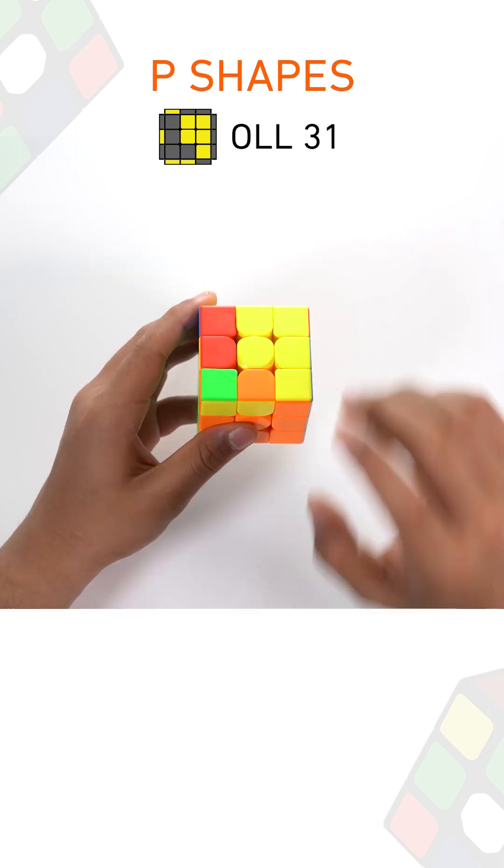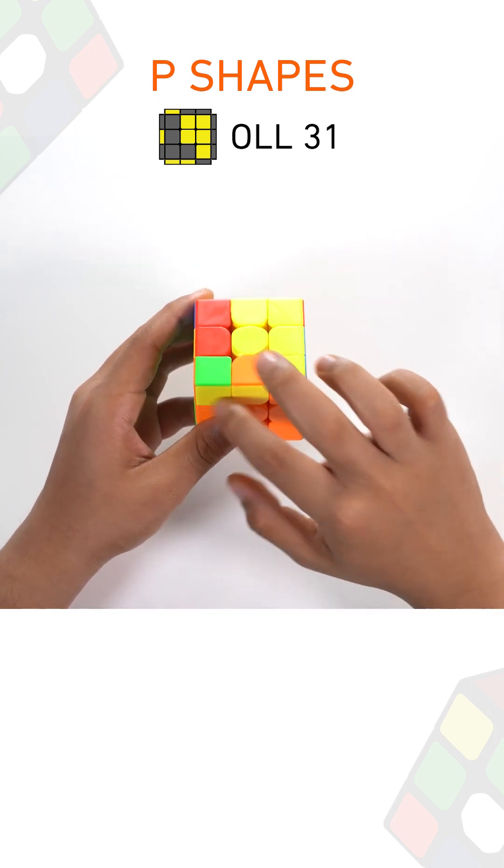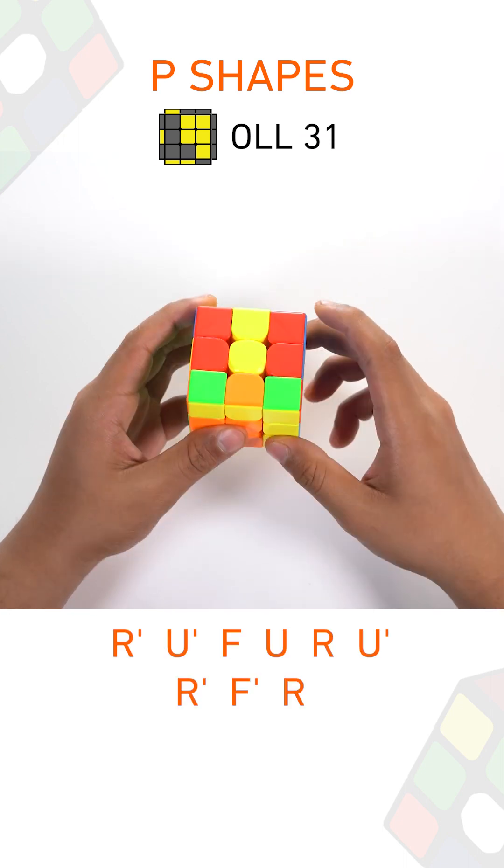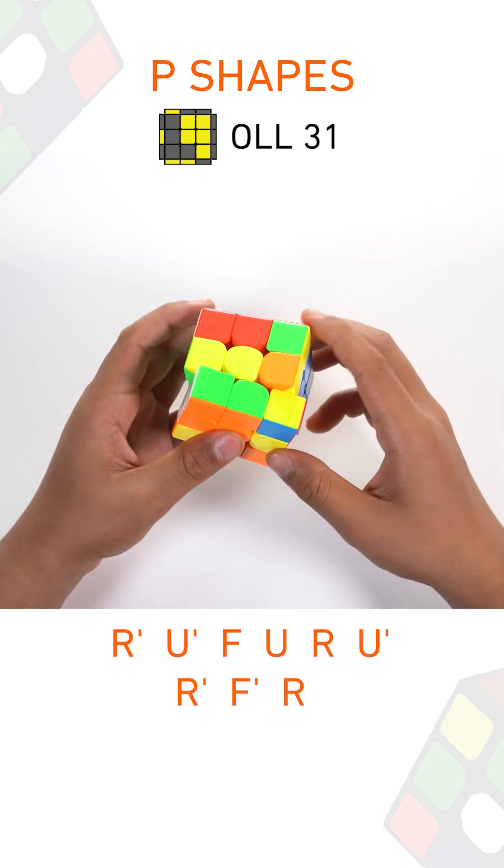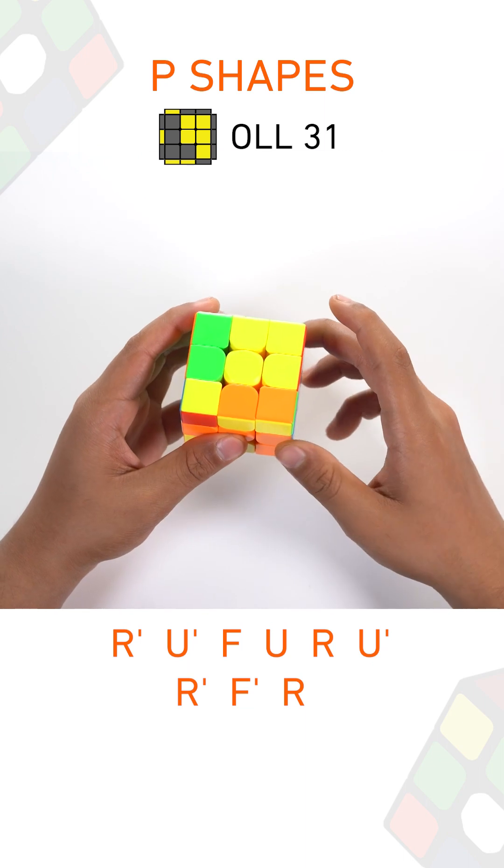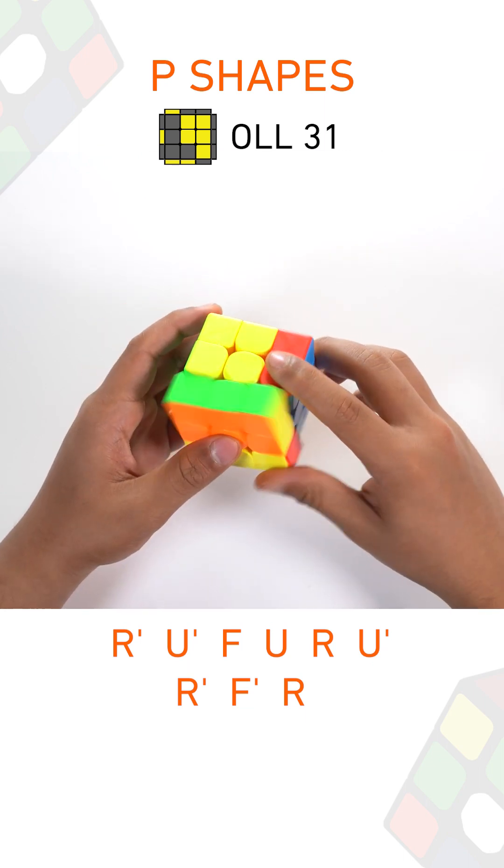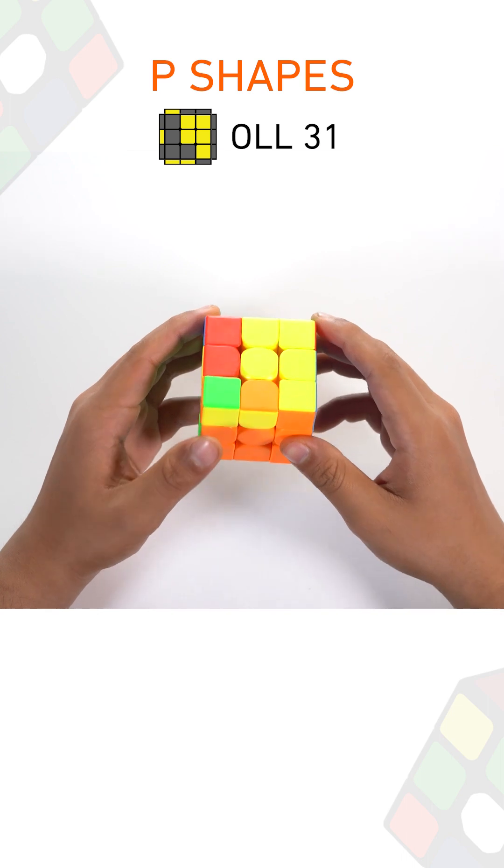In this case, you have to hold it so that this block faces you. The algorithm is R prime, U prime, F, U, R, U prime, R prime, F prime, R. Quickly executed, the algorithm looks like this.